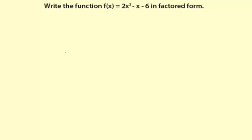Write the function f of x equals 2x squared minus x minus 6 in factored form. Notice there's a coefficient of 2 for the x squared. That means I'm going to use factor by grouping.